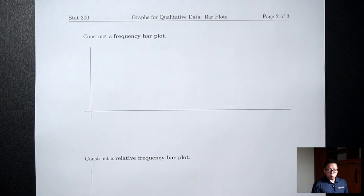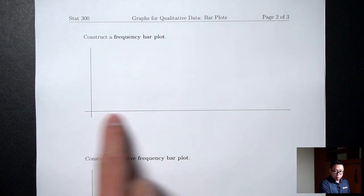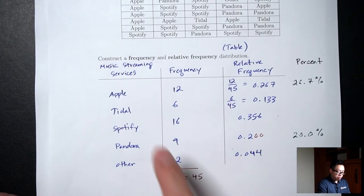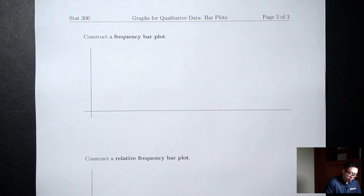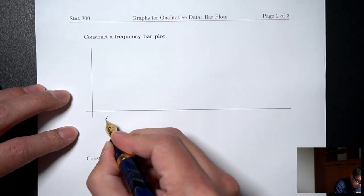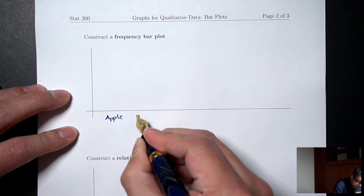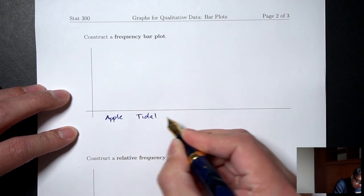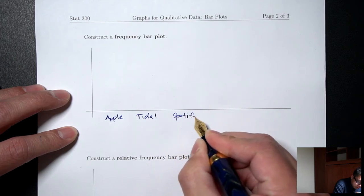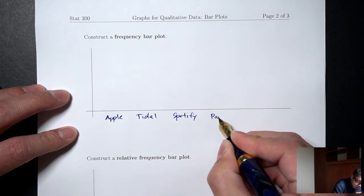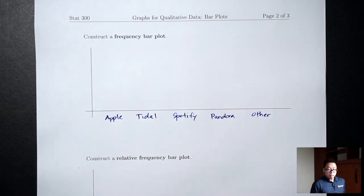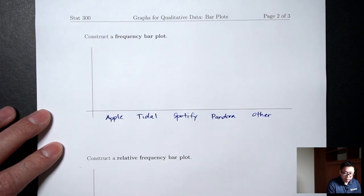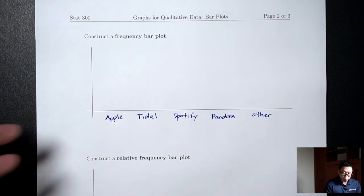The main type of graph for qualitative data is the bar plot. To make a bar plot, on the x-axis at the bottom, I'm going to list out all the possible data values — Apple, Tidal, Spotify, Pandora, Other. What are these? These are all music streaming services.